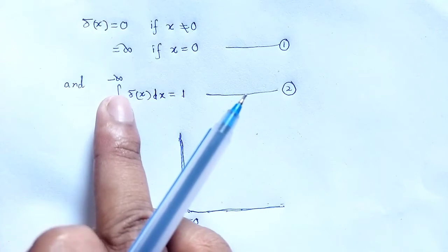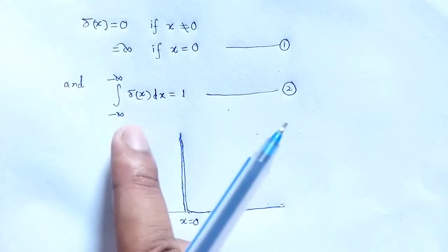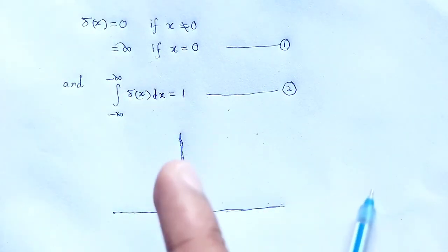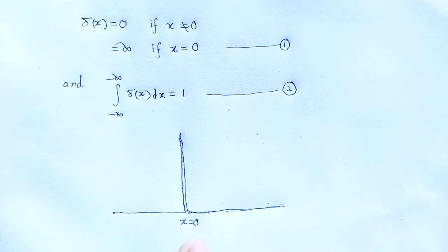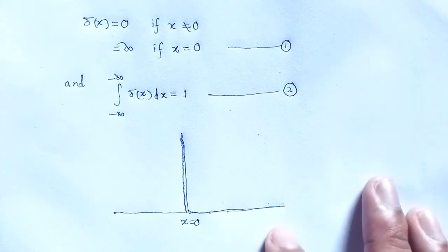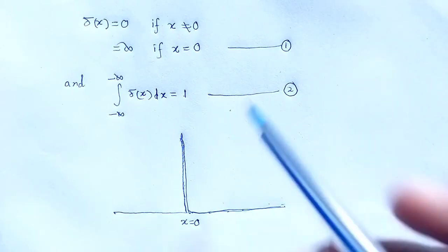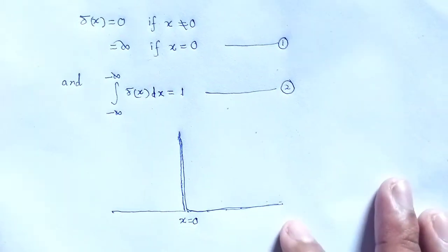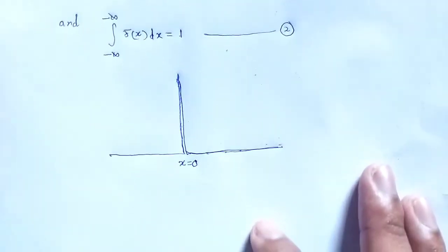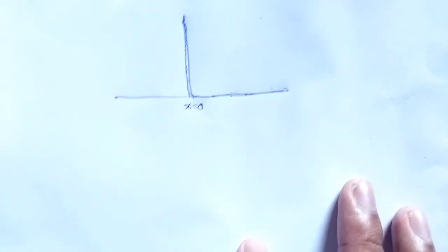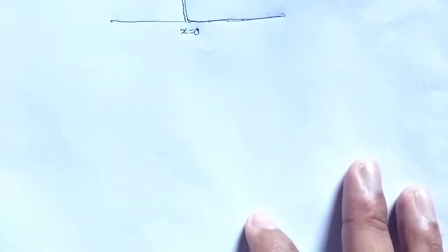As we see, the integration over minus infinity to infinity of δ(x) dx is equal to 1. So it is the limit of a sequence of functions. We can further represent this as the definition of the Dirac delta function. In another way, we can represent the Dirac delta function using an arbitrary function.